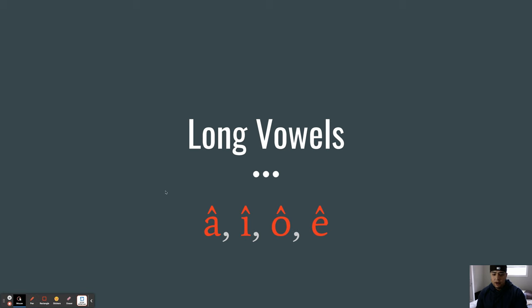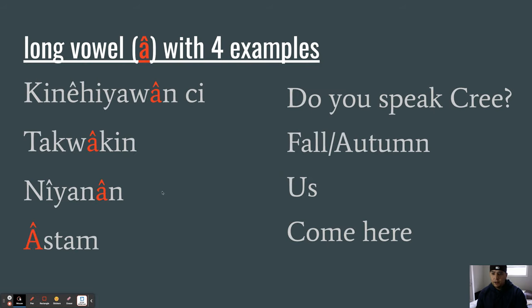Now we're going to get into the long vowels: A, I, O, and E. Long vowel A with four examples. Really listen to that A that's highlighted. Kinihtawân ci? Do you speak Cree? Takwâkin, fall or autumn. Nîyanan, us. Astam, come here. Really listen again for that A. Kinihtawân ci? Do you speak Cree? Takwâkin, fall or autumn. Nîyanan, us. Astam, come here.